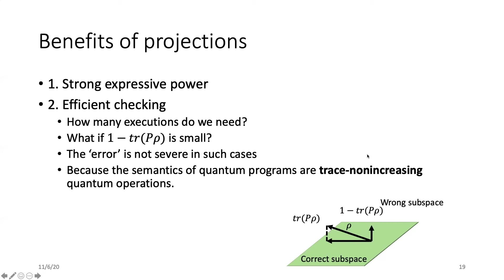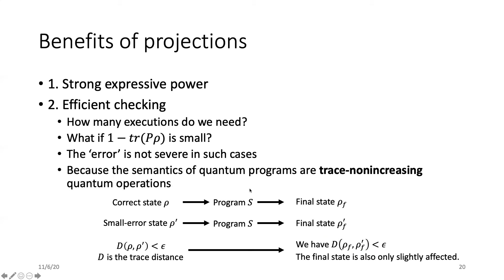But what if the state is very close to the correct subspace? In this case, the trace(Pρ) is very close to one and will not decay very fast. We argue that this error is not severe because the semantics of quantum programs are trace non-increasing quantum operations. We have the following conclusion. For the same program S, if we start from two inputs that are very close and this distance can be bounded by a trace distance, the output of these two states, their trace distance is also very small, bounded by the same parameter. This means we cannot distinguish these two output states by a lot.